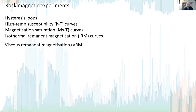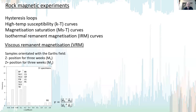We started by measuring the rock magnetic properties of representative samples from each site. We measured hysteresis loops, high-temperature susceptibility, magnetization saturation, and isothermal remanent magnetization. We also did a viscous remanent magnetization experiment in which we oriented samples in different positions in the Earth's field to measure the viscous component, then separated sites according to high or low viscous component. We also did some limited scanning electron microscopy.